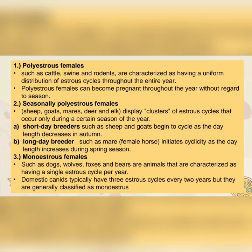And lastly, we have the monoestrous females, such as dogs, wolves, foxes, and bears, which are characterized as having a single estrous cycle per year. Domestic canids typically have three estrous cycles every two years, but they are generally classified as monoestrous.